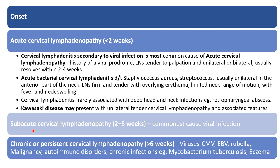If lymph nodes are enlarged beyond 2 weeks, we label it as subacute — also commonly seen in viral infection. Chronic persistent cervical lymphadenopathy when it is beyond 6 weeks always requires further investigations. Causes include viruses such as CMV, Epstein-Barr, and rubella; leukemia; lymphoma; autoimmune disorders such as SLE and JIA; chronic infection such as mycobacterium tuberculosis; and even eczema can lead to persistent cervical lymphadenopathy.